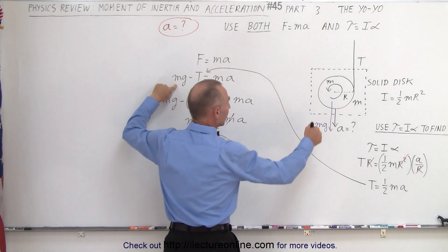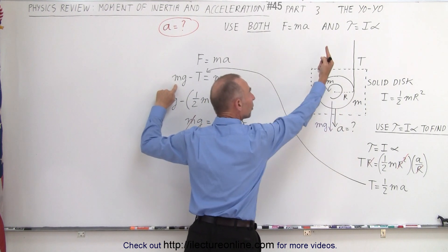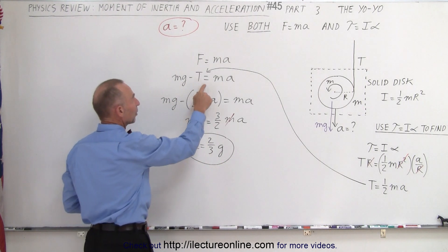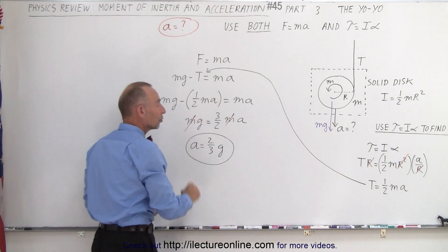The net force will be the force aiding the acceleration, MG, minus the force opposing acceleration, which is T. So the difference of that must be the mass times acceleration. Solve that for A, you get A equals two-thirds G.